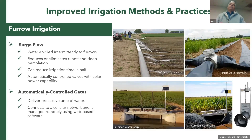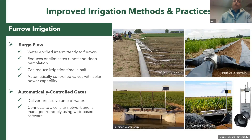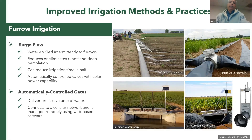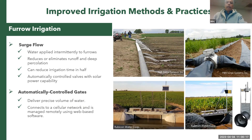One option for improving flood irrigation efficiency is surge flow, where you apply water intermittently — to one section of the field for a certain time, then stop and apply it to another section. This reduces runoff and deep percolation. It's an automated system you can control remotely using solar panels. Automated gates allow you to control the amount applied from your cell phone or computer.